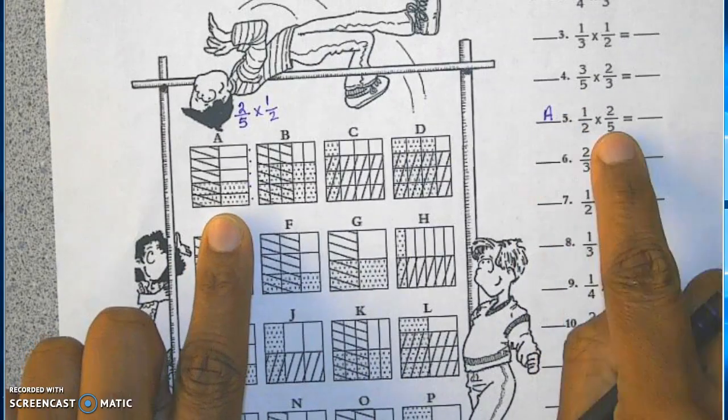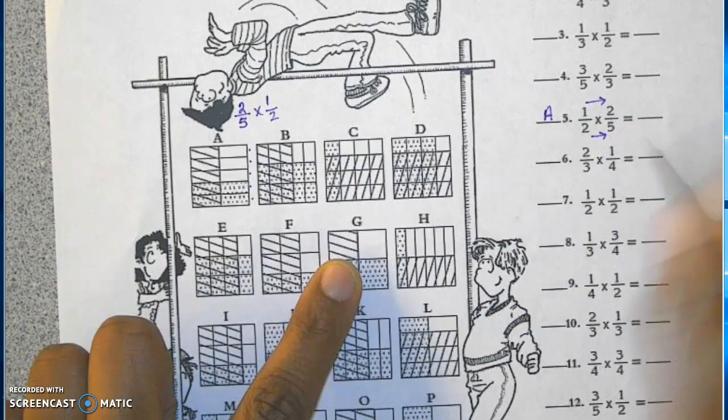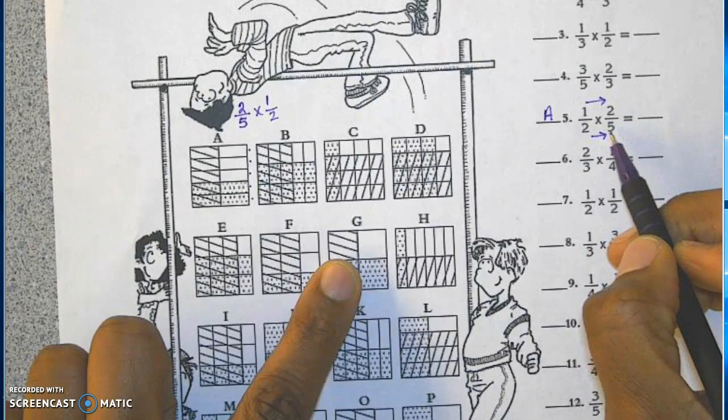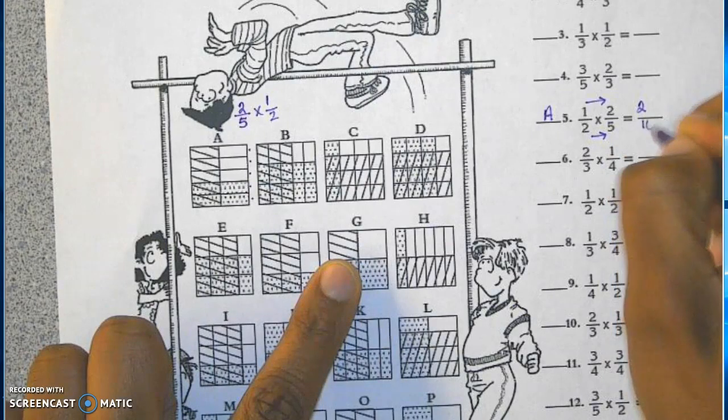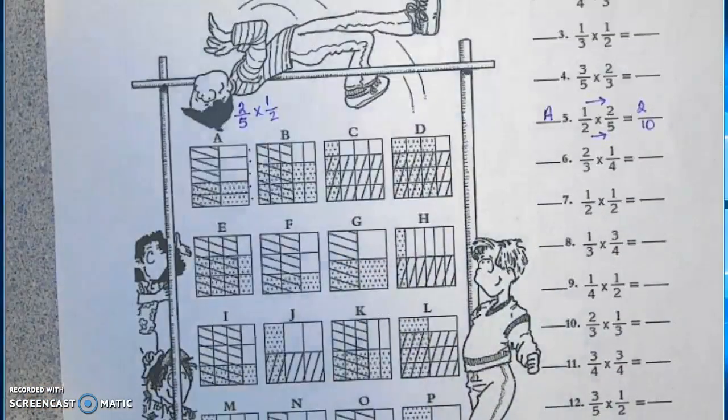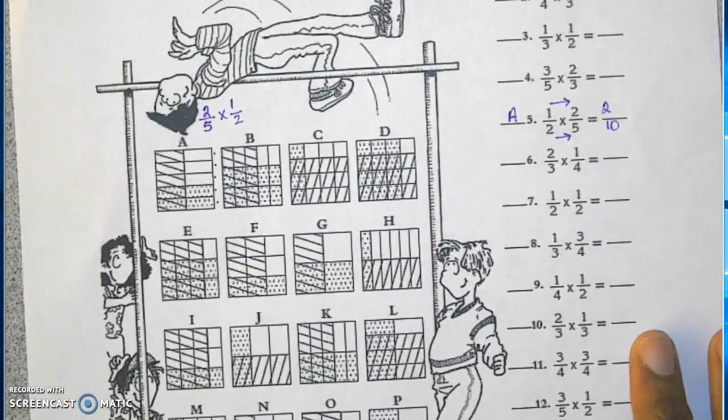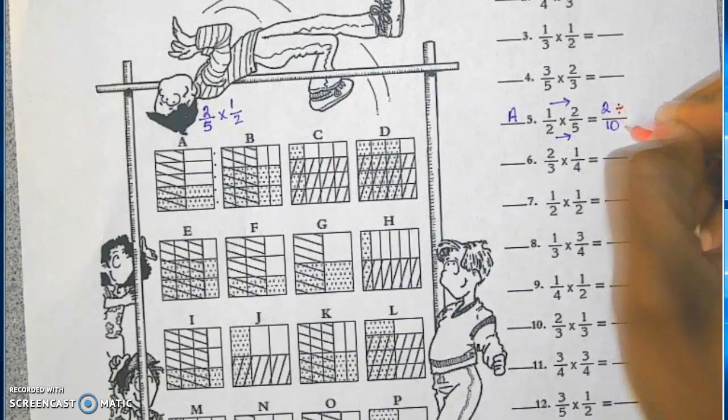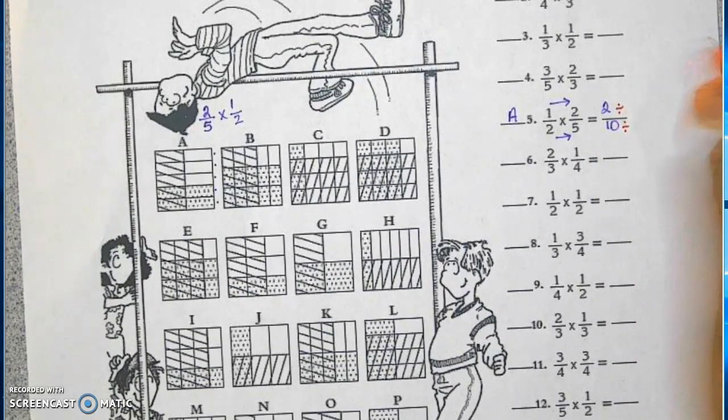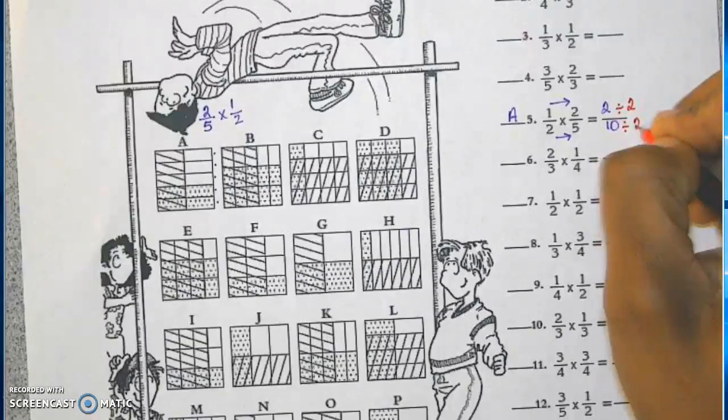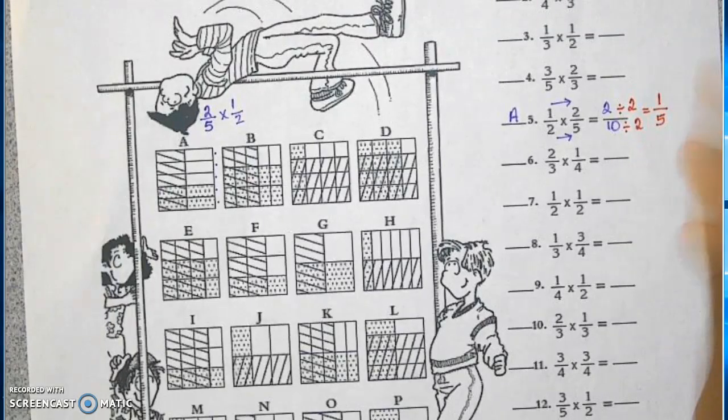So number five matches A, and then I'm going to go ahead and multiply. We know that when we multiply two fractions, we're going to multiply the numerator times the numerator and the denominator times the denominator. One times two is two, and two times five is ten. We also want to get in the habit of practicing simplification. Any time a fraction can be simplified, we want to go ahead and do that. I can tell that both of these are multiples of two. So I can evenly divide the numerator by two and the denominator by two. Two goes into two one time, two will go into ten five times, and my answer will be one-fifth.